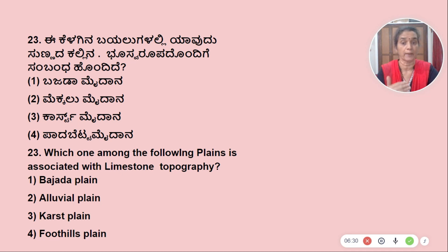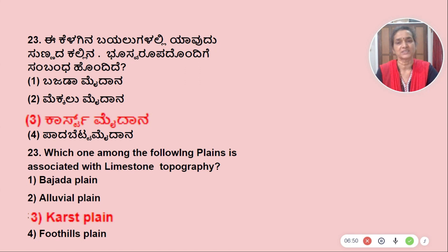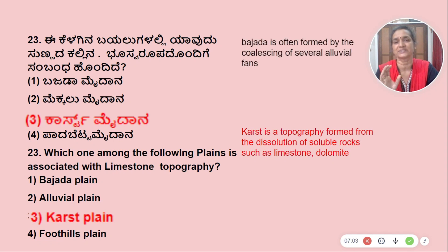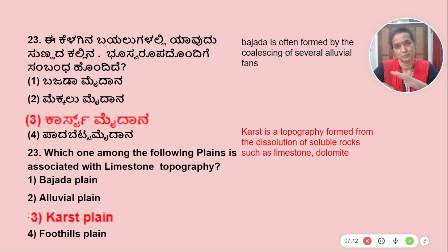Which one among the following plains is associated with limestone topography? The options are: Bajada Plain, Alluvial Plain, Karst Plain, Foothill Plain. The answer is Bajada Plain.